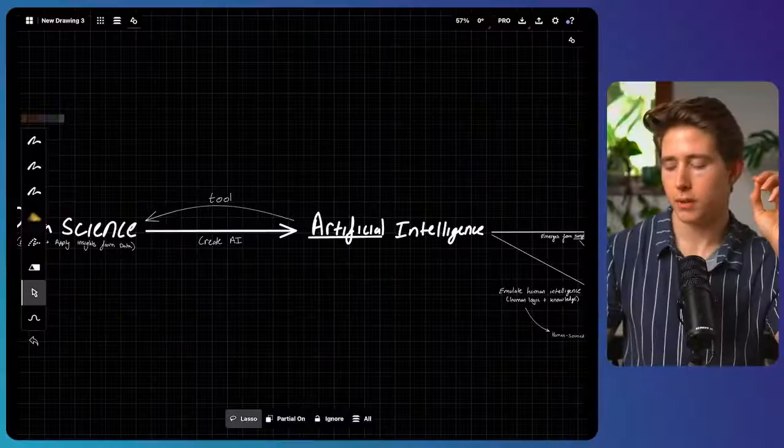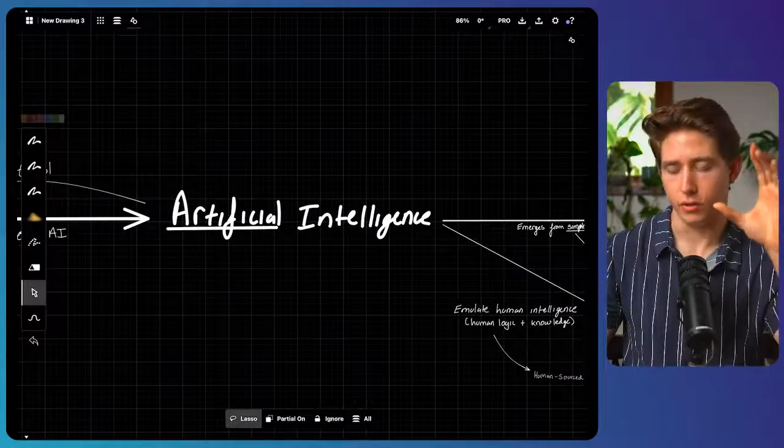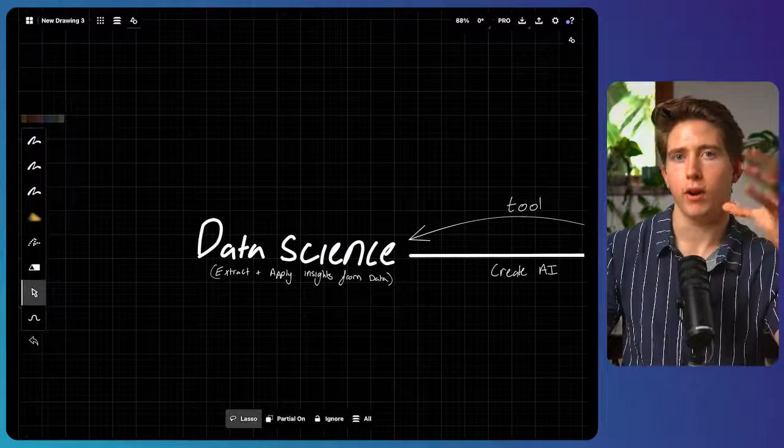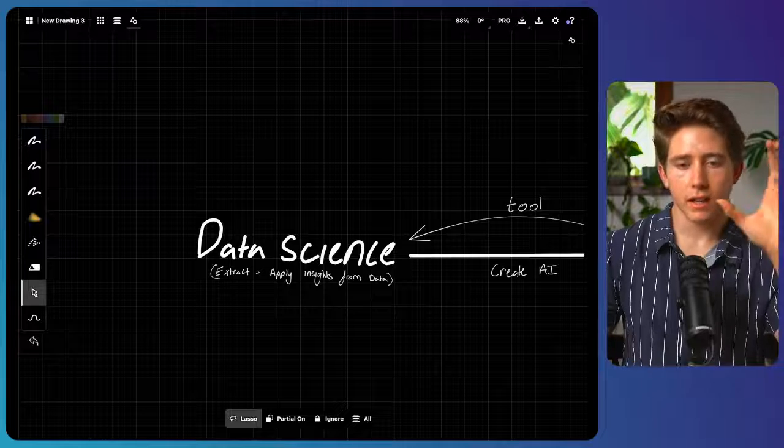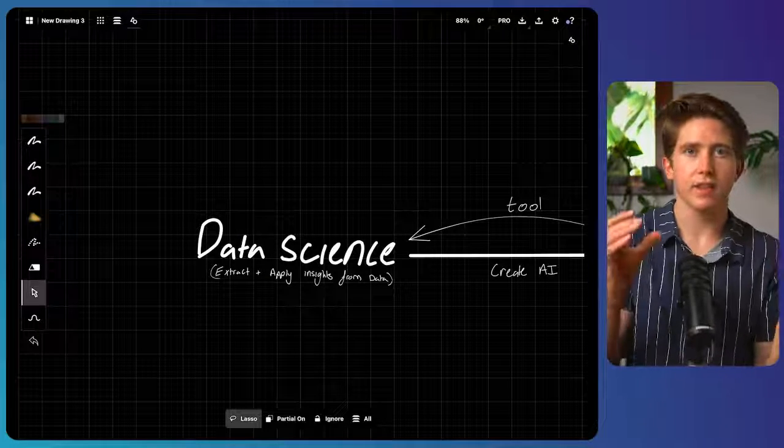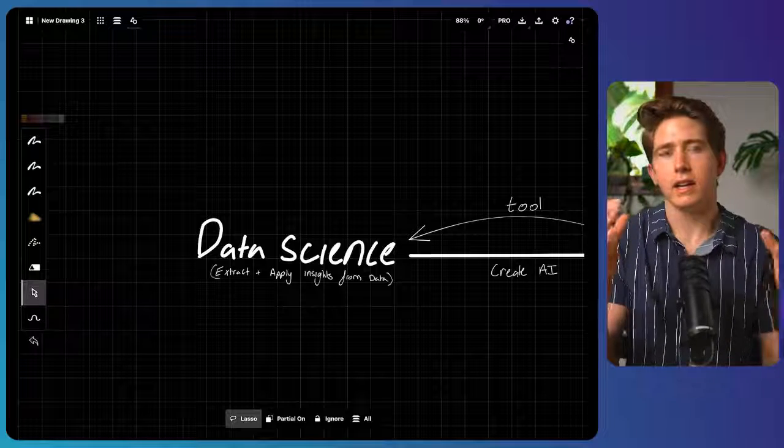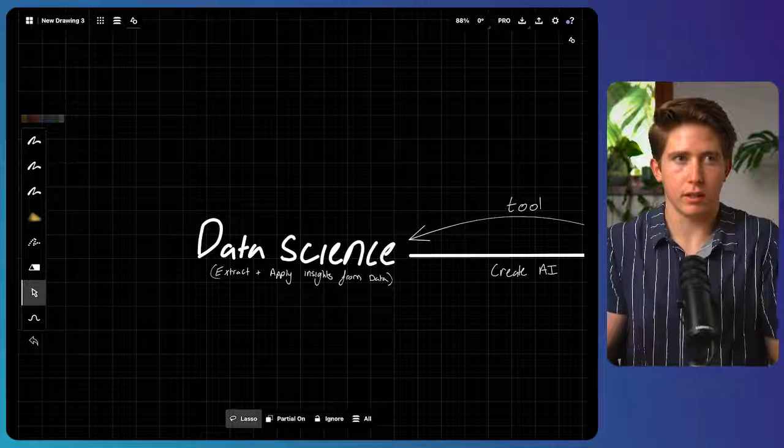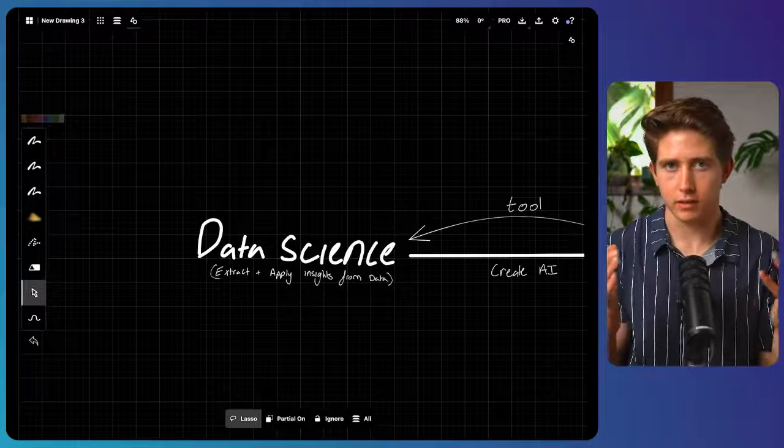The first step in understanding artificial intelligence is understanding that it's a subset of the overarching realm of data science. Data science is this idea of how do we extract and then subsequently apply insights from data.